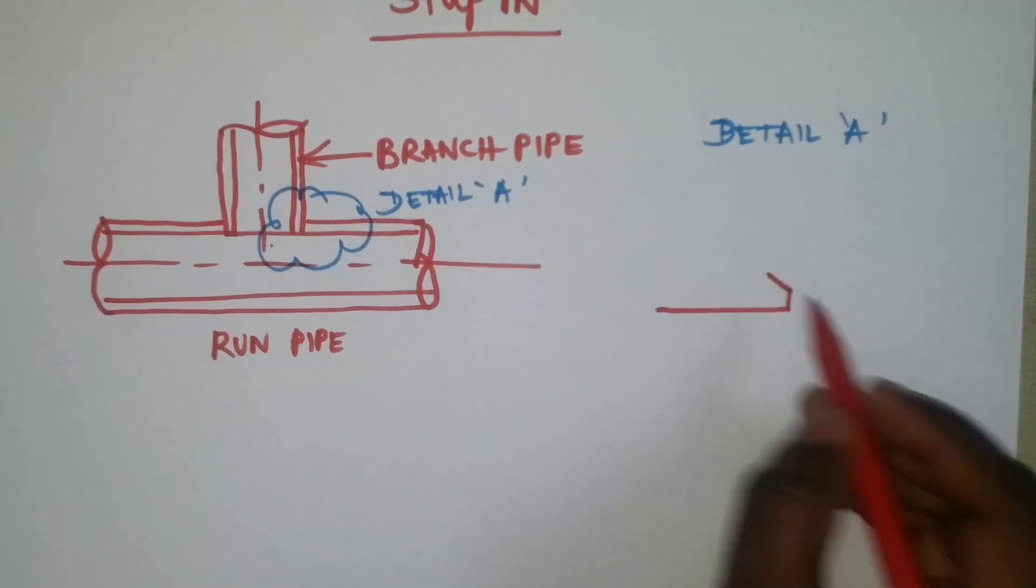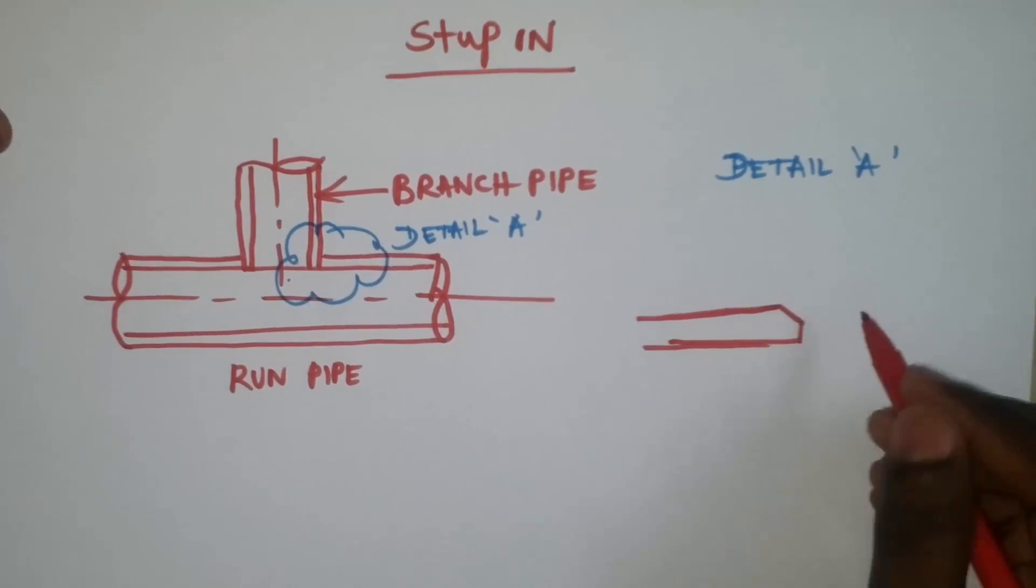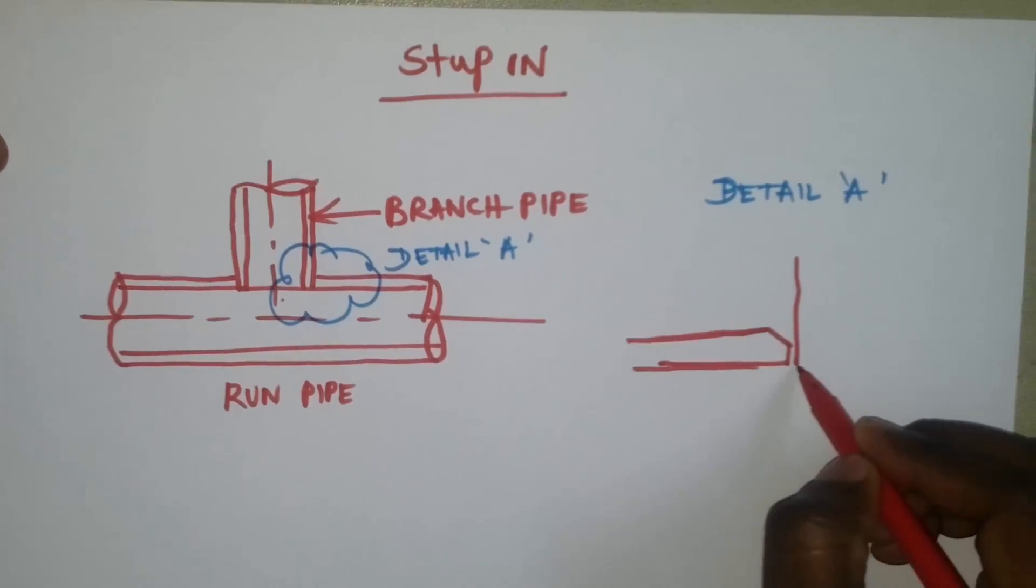Let's see the stub in branch connection fit up and welding acceptable measurement details.